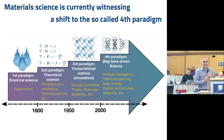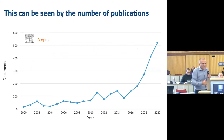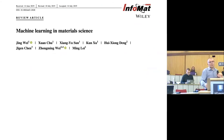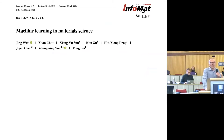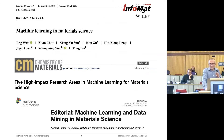This can be seen if you look at the number of publications that is growing almost exponentially. What is nice about the fact that the field is growing is that you can find plenty of review articles. If you're new to the field, you can just search for a review about machine learning and material science, and you will find really plenty of those — there is a huge number of those.